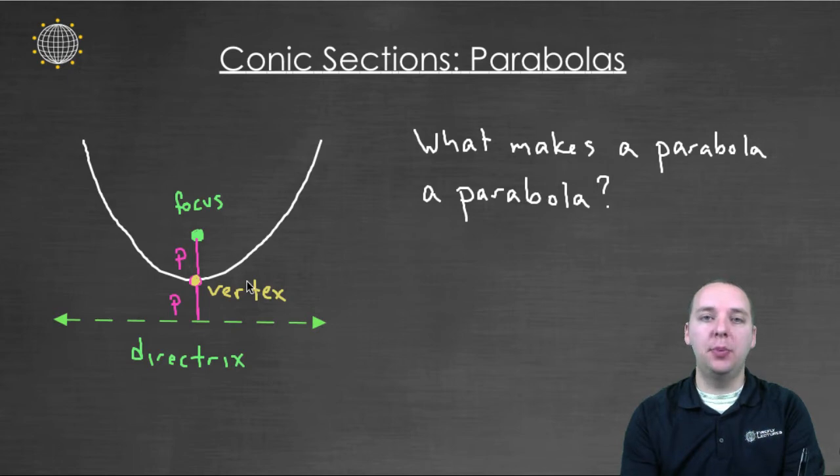So for example an easy point that's the same distance away is just halfway between them. So if here's the focus and here's the directrix, here's one point that's certainly the same distance away. We call this distance here P. So P is the distance between the focus and what becomes what's called the vertex of the parabola and the vertex to the directrix. These are the same distance away.